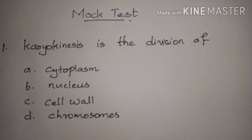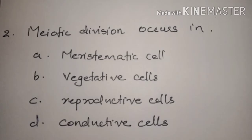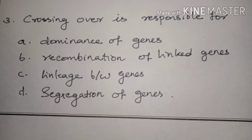Question 1: Karyokinesis is the division of — Answer: Option B, nucleus. Question 2: Meiotic division occurs in — Answer: Option C, reproductive cells. Question 3: Crossing over is responsible for — Answer: Option C, linkage between genes.